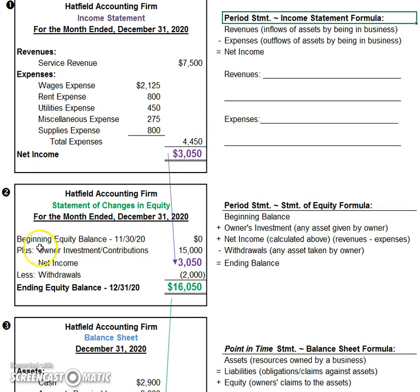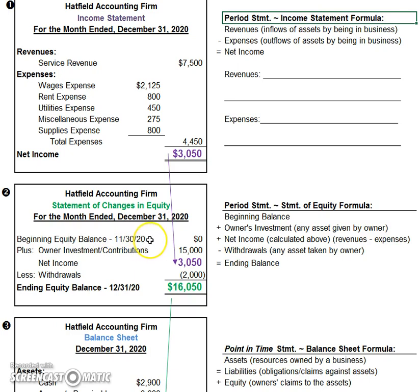The statement of equity is also a period statement. What was the beginning equity at the beginning of this accounting period? Some companies use the beginning of the month — December 1st, 2020. Some use the ending date of the month before, such as November 30th, 2020. What was the beginning equity, how did it change, and what was the ending equity — all over just one period of time, which in our case was a month.